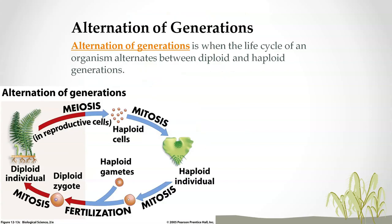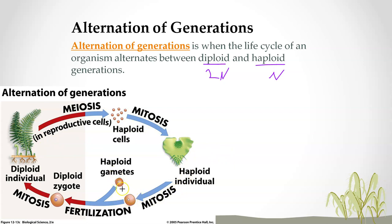Plants have a reproductive cycle called alternation of generations. The life cycle of an organism alternates between diploid (2N) — two copies of the chromosome — and haploid (N). Meiosis produces haploid cells, and through mitosis that becomes a haploid individual. This is an example using a fern. The haploid individual divides and then combines with another gamete — fertilization — developing into the zygote. The zygote develops into the adult organism through mitosis.